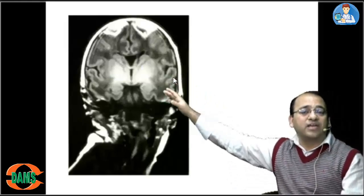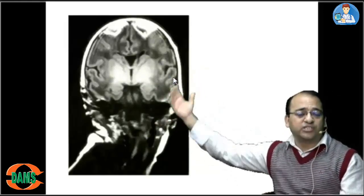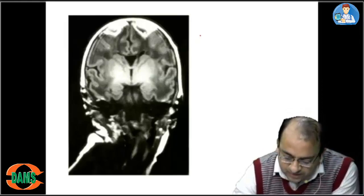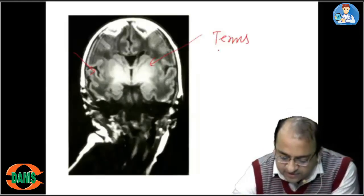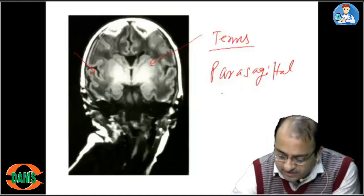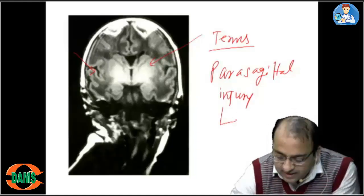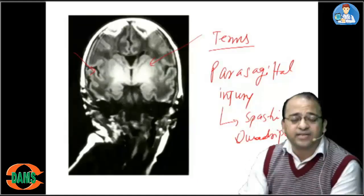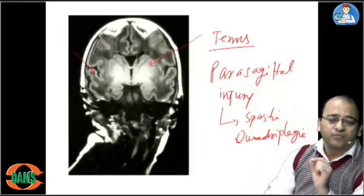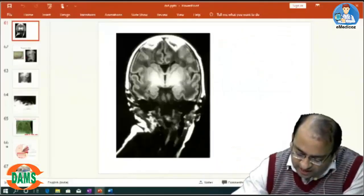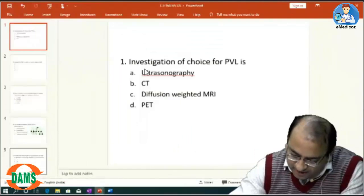On the other hand, in a term baby — this is an MRI coronal section — the injury is in the parasagittal area. This parasagittal injury is classically seen in term babies, and later in life they get a spastic quadriplegic type of cerebral palsy. The answer to this question was diffusion-weighted MRI — the third option.